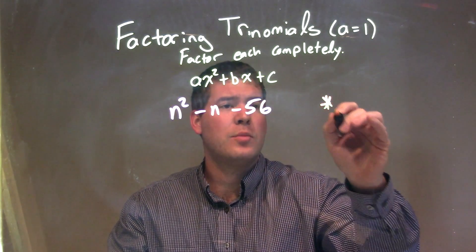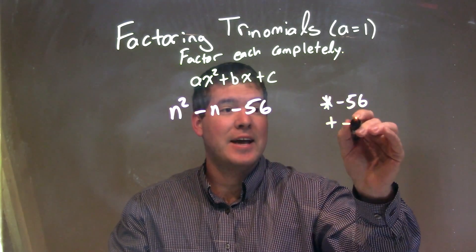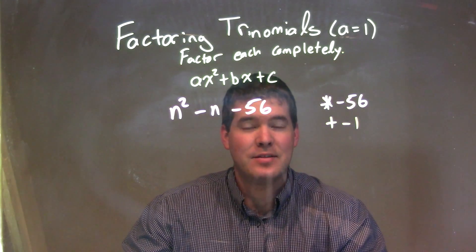What two numbers multiply to be negative 56, my c value, but add to be my b value, which is negative 1? Well, what two numbers multiply to be negative 56 and add to be negative 1?